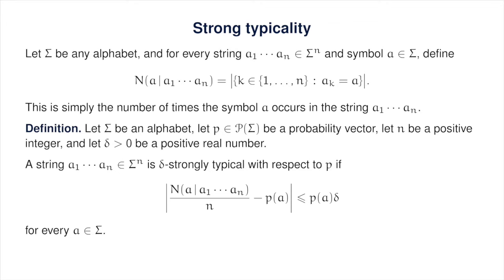The fact that we have p of a times delta on the right-hand side of the inequality, as opposed to just delta, is an aspect of the definition that happens to be convenient for technical reasons. In particular, if we have a symbol a for which p of a is very small, then our error tolerance for the frequency with which this symbol appears becomes proportionately smaller. And if p of a equals zero for some a, then a strongly typical string cannot include that symbol at all. You will sometimes find slightly different definitions for strong typicality, but this is one of the standard definitions and it's the one we're going to use.